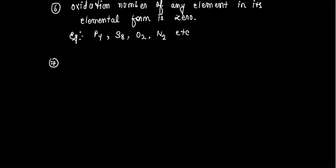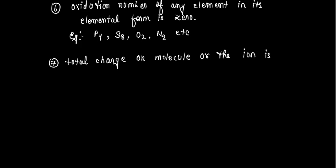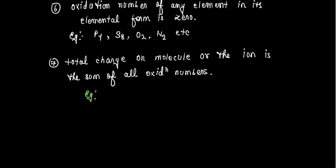The total charge on the molecule or the ion is the sum of all oxidation numbers. For example, in NaCl, oxidation number of Na is plus 1 and oxidation number of chlorine is minus 1. When you add them both, you get 0, which is why there is no charge on NaCl. So we take the oxidation number of each atom and add them up - whatever we get will be the charge.